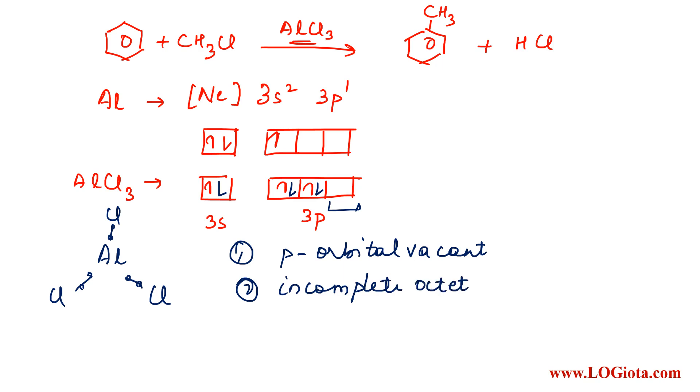The third thing: chlorine is more electronegative than aluminum, so the shared pair of electrons will be attracted more towards chlorine. Thus aluminum becomes electron deficient. These three factors are enough for AlCl3 to act as a Lewis acid.